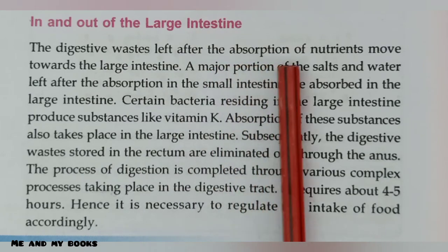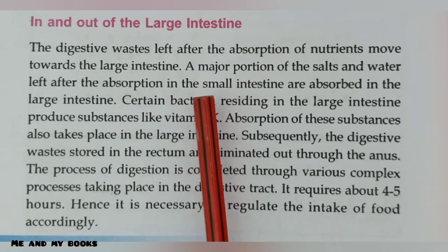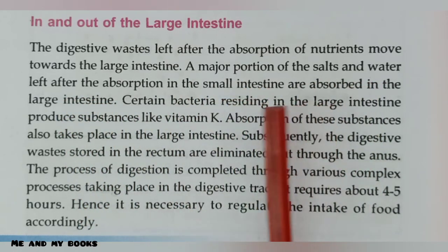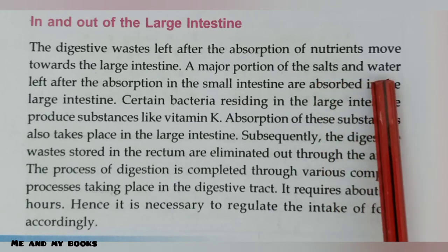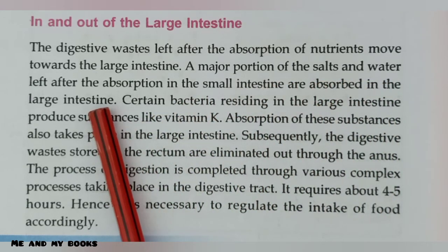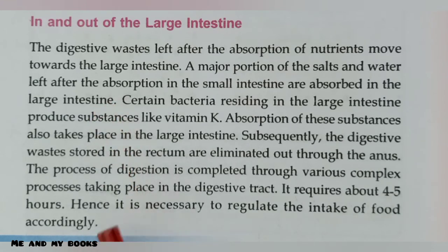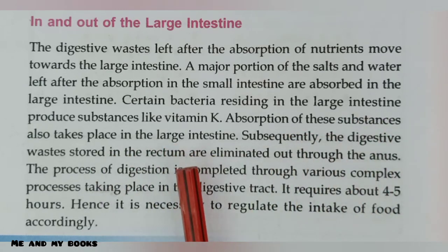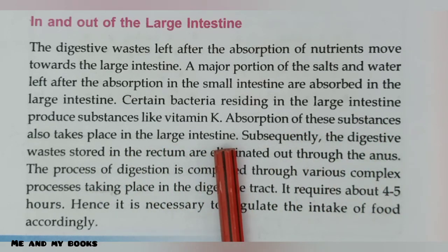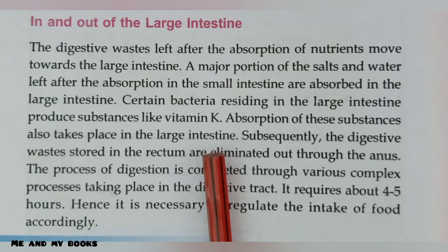The digestive wastes left after the absorption of nutrients move towards the large intestine. A major portion of the salt and water left after absorption in the small intestine are absorbed in the large intestine. Certain bacteria residing in the large intestine produce substances like vitamin K. Vitamin K is also absorbed in the large intestine. So large intestine absorption includes salt, water, and vitamin K.